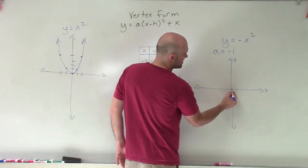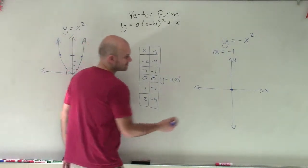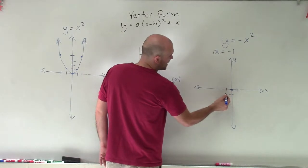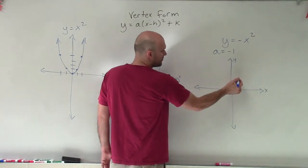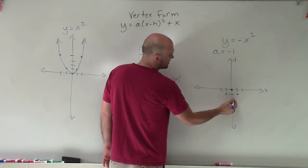So my vertex is going to remain the same, because we notice that when we put in 0, we're still going to get 0. But now, instead of going left 1, up 1, now I'm going to go left 1, down 1. Instead of going right 1, up 1, I'm going to go right 1, down 1. And that's going to be the case for the next 2, as well.